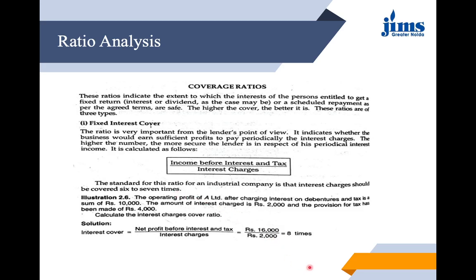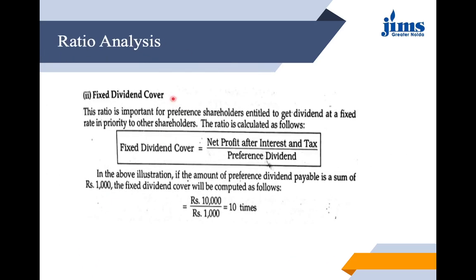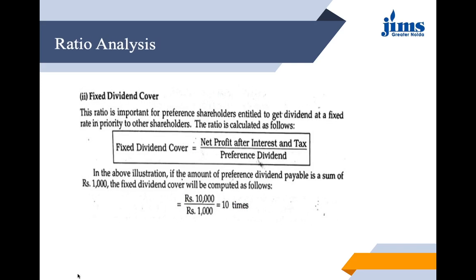So PBIT is ₹16,000 divided by interest charges of ₹2,000, giving a ratio of 8 times. As per the standard, this is a good ratio. Next is the Fixed Dividend Cover ratio. This ratio is important for preference shareholders entitled to receive a dividend at a fixed rate in priority. The formula is net profit after interest and tax divided by the preference dividend. Using the same example with preference dividend of ₹1,000, the ratio is 10,000 divided by 1,000 = 10 times, which is also good.